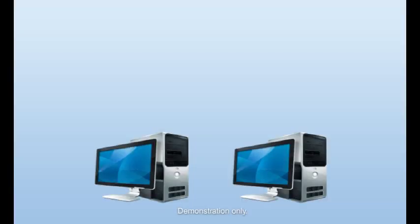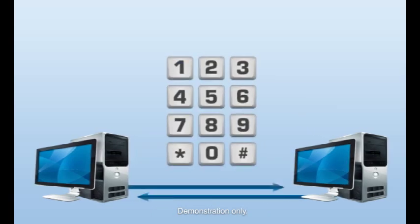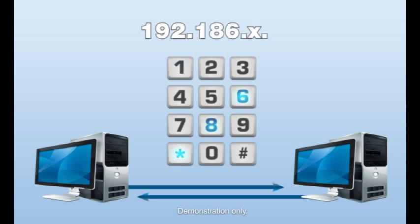An IP address on a basic level is similar to a telephone number. In computer terms, if one computer wants to talk to another, they call each other using IP addresses. Like your telephone number, an IP address is a unique number. However, unlike a telephone number, the IP address of a computer can change without notice. This type of address is called a dynamic IP.